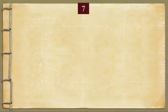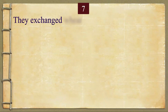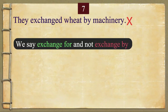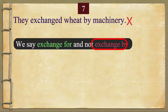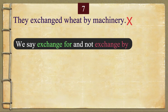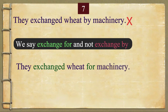Number 7 is: they exchanged wheat by machinery — this is incorrect. We say exchange for, and not exchange by. Please repeat the correct sentence after me: They exchanged wheat for machinery.